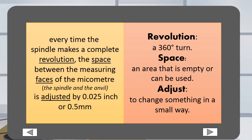Revolution is a 360 degree turn. Space is an area that is empty or can be used. Adjust is to change something in a small way.